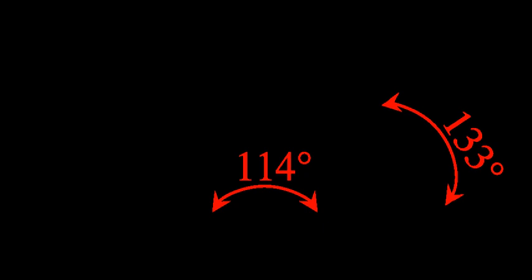Dinitrogen pentoxide is the chemical compound with the formula N2O5, also known as nitrogen pentoxide. N2O5 is one of the binary nitrogen oxides, a family of compounds that only contain nitrogen and oxygen.